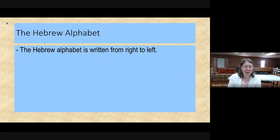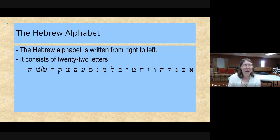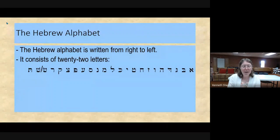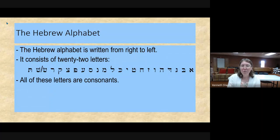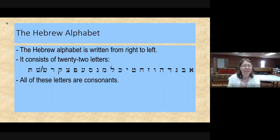When we met last week, we were talking about the Hebrew alphabet. The Hebrew alphabet is written from right to left, while English is written from left to right. This alphabet consists of 22 letters: Aleph, Beith, Gimel, Daleth, He, Waw, Zion, Heith, Teith, Yodh, Kath, Lameth, Mem, Noon, Samach, Ayan, Pe, Sade, Kof, Reish, Sin, Sheen, and Tal. All of these letters are consonants. There are 23 letters represented here, but two — Sin and Sheen — are in fact the same letter, as we would see in Psalm 19.